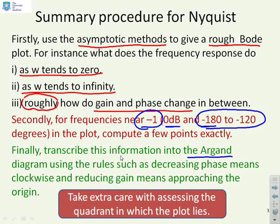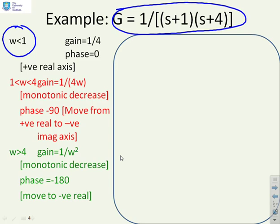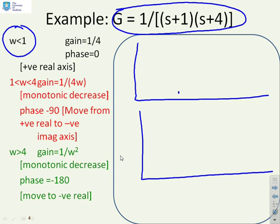Here's a simple example to get started. We have G equals 1 over (s+1)(s+4). At low frequencies, omega less than 1, the gain is going to be a quarter at frequency zero, and the phase will be zero. Putting in the Bode diagrams with corner frequencies one and four, at low frequencies the gain is a quarter and the phase is zero.